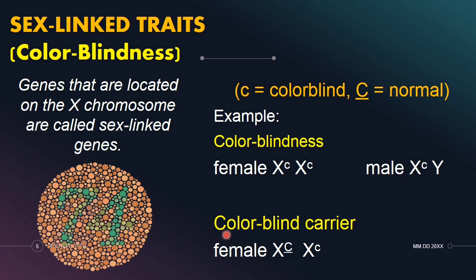How about color blind carrier? Pag sinabing carrier, tagadala — tagapagmana. Ibig sabihin, hindi nagmanifest sa kanya yung pagiging color blind. Sa female, ang ginagamit natin ay capital C and small letter C — isang X lang ang merong color blind, pero yung isa pang X ay capital letter which is normal. So very rare sa babae ang pagiging color blind, kasi kailangan dalawang X niya ang merong color blind. Sa condition na ito, ito ay color blind carrier.